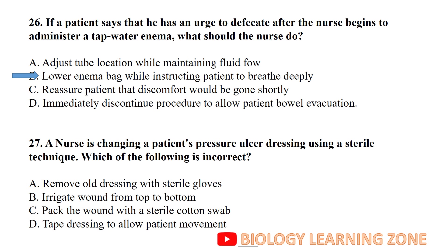The nurse is changing an infected pressure-area dressing using sterile technique. Which action is incorrect? Removing all dressings with sterile gloves — you can remove dressings with clean gloves, not necessarily sterile gloves. Removing with sterile gloves for the soiled dressing step is the incorrect technique.